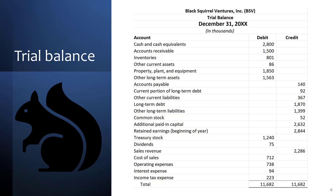Notice at the bottom that we have totaled the debit column and the credit column, and those total debits are equal to total credits. The purpose of the trial balance is to make sure that debits equal credits after all the account postings. The trial balance is not a financial statement. Do know it has to be in order, and this order that you're looking at here is a good order to use as a basis for future trial balances.